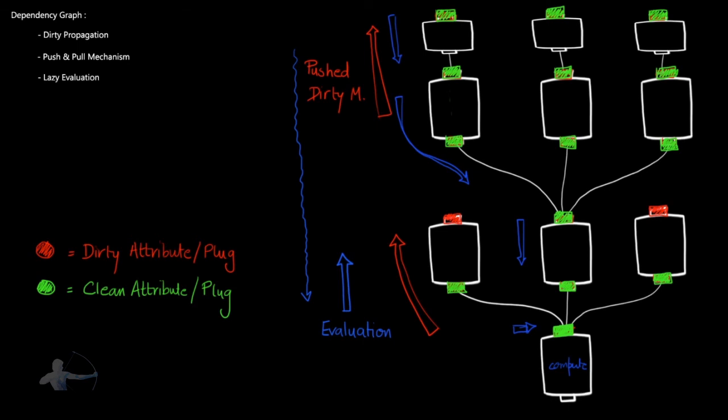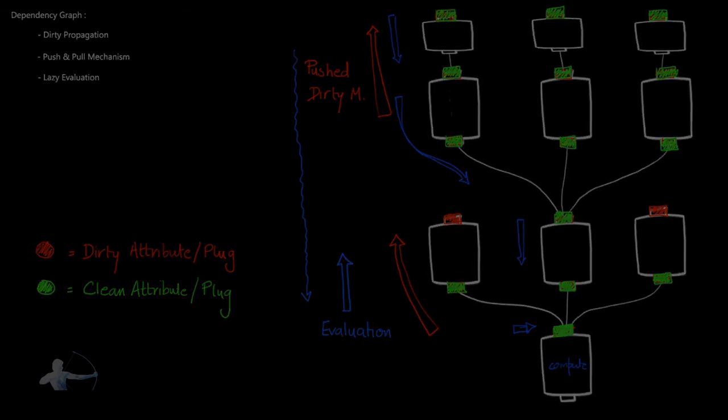So that is what lazy evaluation is. In this video we understood dirty propagation, push and pull mechanism, and lazy evaluation, and now you know how a dependency graph works inside Maya. Thanks so much.